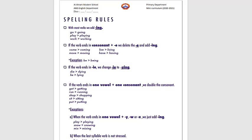If the verb ends in IE, we change IE to Y and add ING: die — dying, lie — lying. If the verb ends in one vowel plus a consonant, we double the last consonant: get — getting (doubling the T), run — running (doubling the N), shop — shopping (doubling the P), sit — sitting, put — putting.